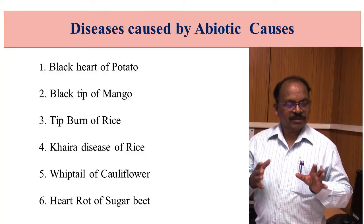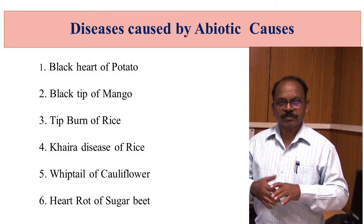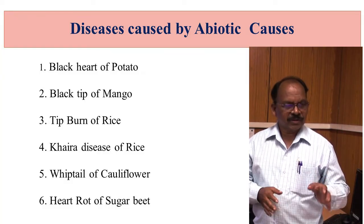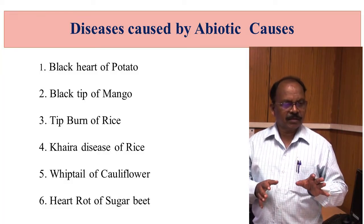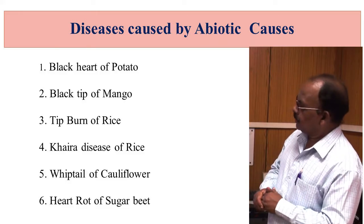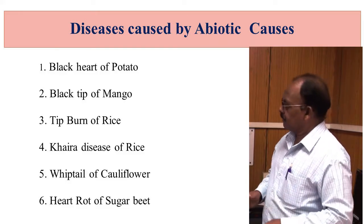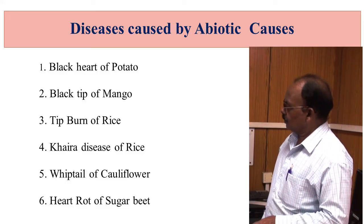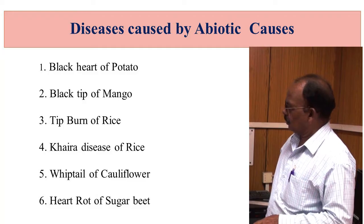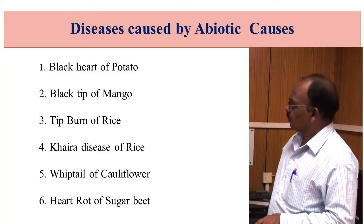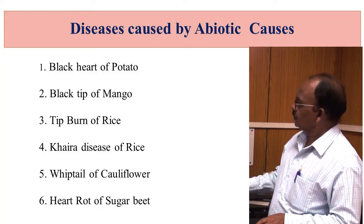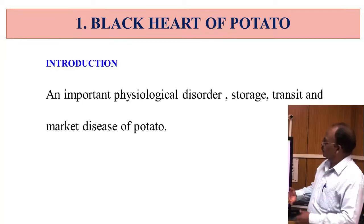The diseases which are caused by abiotic causages include black heart of potato, black tip of mango, tip burn of rice, Khaira disease of rice, whiptail of cauliflower, and heart rot of sugar beet. All these are important diseases caused by abiotic causages.